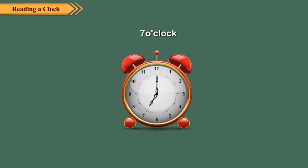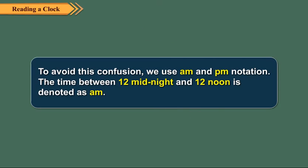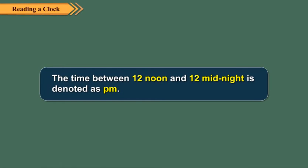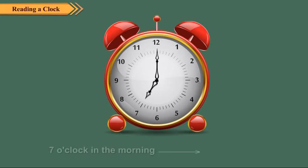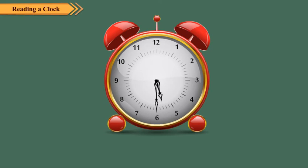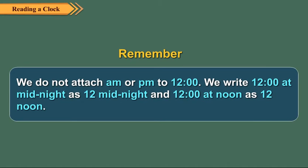When we say that it is 7 o'clock, it may be 7 o'clock early in the morning or 7 o'clock in the evening. To avoid this confusion, we use AM and PM notations. The time between 12 midnight and 12 noon is denoted as AM. The time between 12 noon and 12 midnight is denoted as PM. For example, 7 o'clock in the morning is denoted as 7 AM. Similarly, 5.30 in the evening is denoted as 5.30 PM. Remember, we do not attach AM or PM to 12. We write 12 at midnight as 12 midnight and 12 at noon as 12 noon.